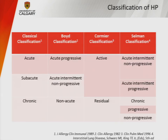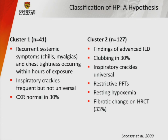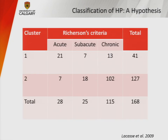Part of the challenge with HP may be its classifications — acute, subacute, chronic, active, residual — which potentially just describe clinical behavior. A cluster analysis of the HP study cohort broke patients into two clusters: cluster one had recurrent symptoms, chest tightness, crackles, and sometimes a normal chest x-ray — more consistent with acute and subacute HP; cluster two was more consistent with chronic findings. This suggests the traditional acute-subacute-chronic framework may not fully reflect the underlying pathophysiology.